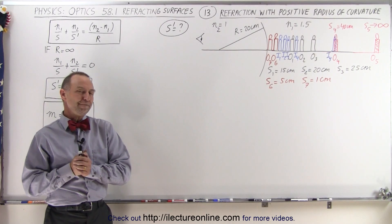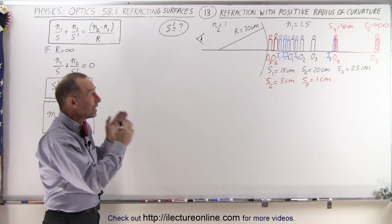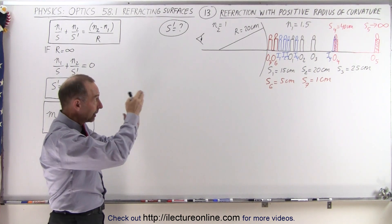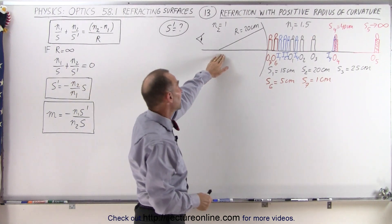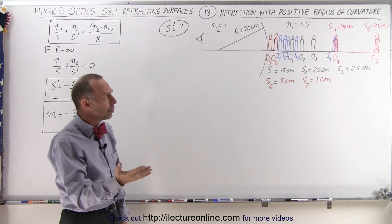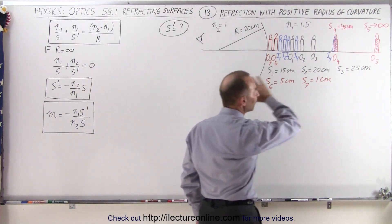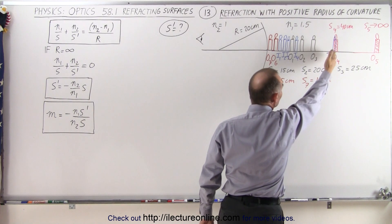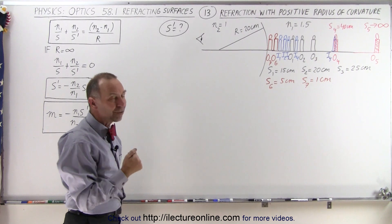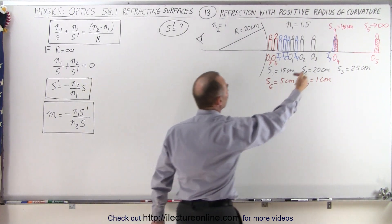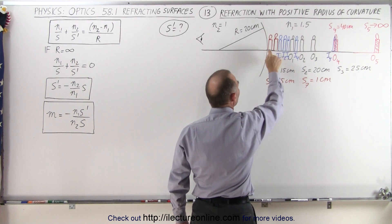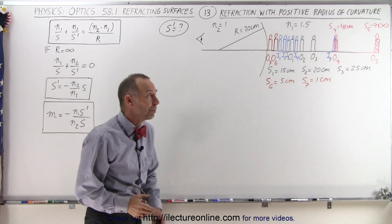Welcome to our lecture online. Now that we've found what happens to the image position as we move the object farther and farther to the right — farther away from the boundary between the index of refraction being equal to 1 and the index of refraction being equal to 1.5 — we notice that if the object goes out to infinity, the image will find the position 40 centimeters away from the boundary on the same side. But what happens when we start moving the object closer and closer to the boundary? We'll move an object 5 centimeters and then 1 centimeter away from the boundary to see what happens to the image.